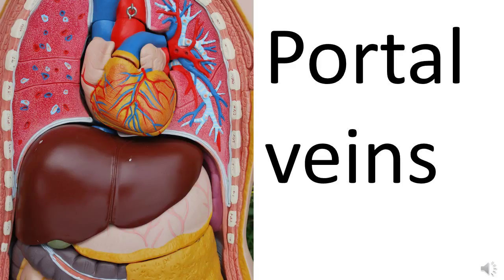The liver actually has two blood supplies because it is very metabolically active and needs oxygen-rich blood as well. Blood is supplied to the liver via the hepatic artery, which branches fairly directly from the aorta. So the liver has an arterial blood supply carrying oxygen-rich blood from the aorta, and also the hepatic portal vein carrying toxin-containing and nutrient-rich blood from the gut for biochemical processing.